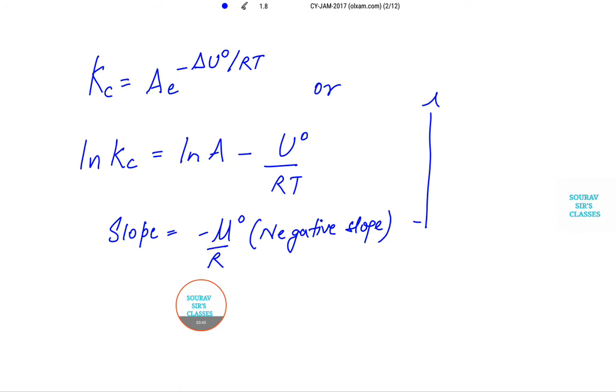It becomes minus 1 by T I am measuring on the horizontal axis, and on the vertical axis it is log Kc. So it is a downward slope, negatively sloped. So M slope is equal to minus U not by R.